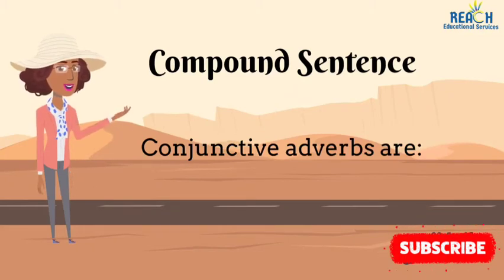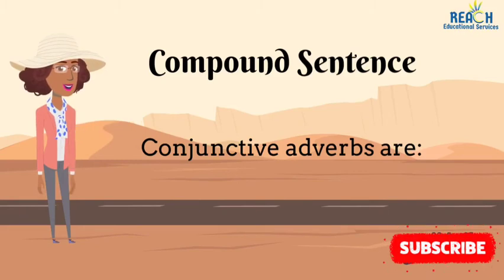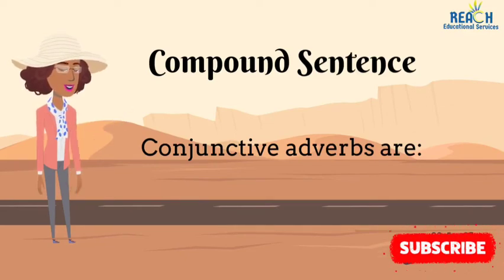Another thing used in compound sentences are conjunctive adverbs. When you use the coordinating conjunction and, please remember that a comma goes before the and in compound sentences. When it comes to conjunctive adverbs — moreover, however, otherwise, and therefore — you have to remember that the comma comes after the conjunctive adverb. For example: Bob is handsome; moreover, he is rich. We see a semicolon after the first clause, then the conjunctive adverb moreover, then a comma, then he is rich. When put together you get a complete sentence and a complete thought.